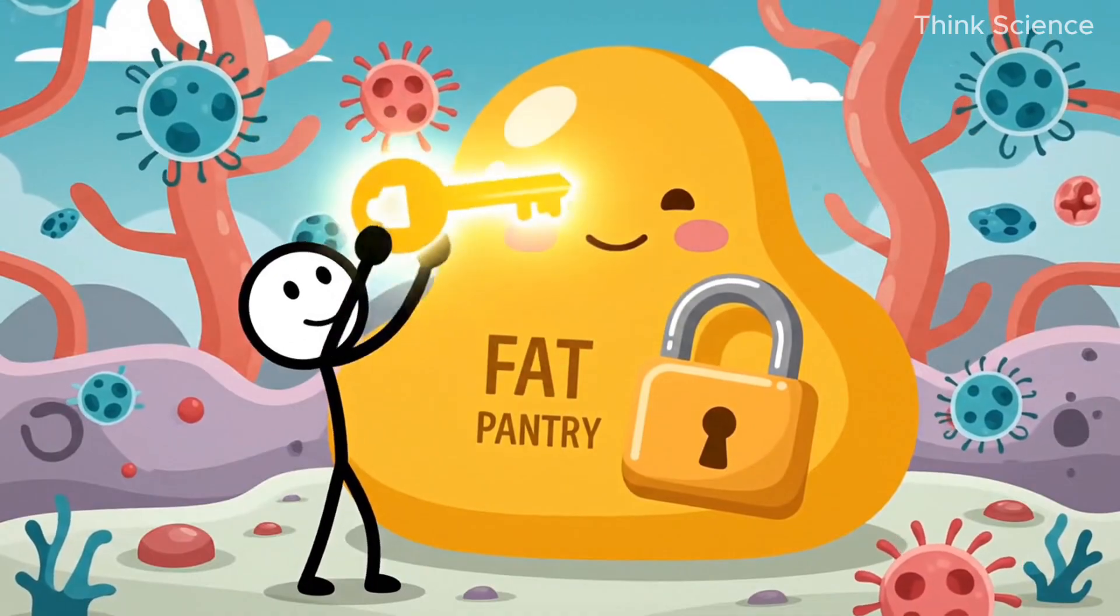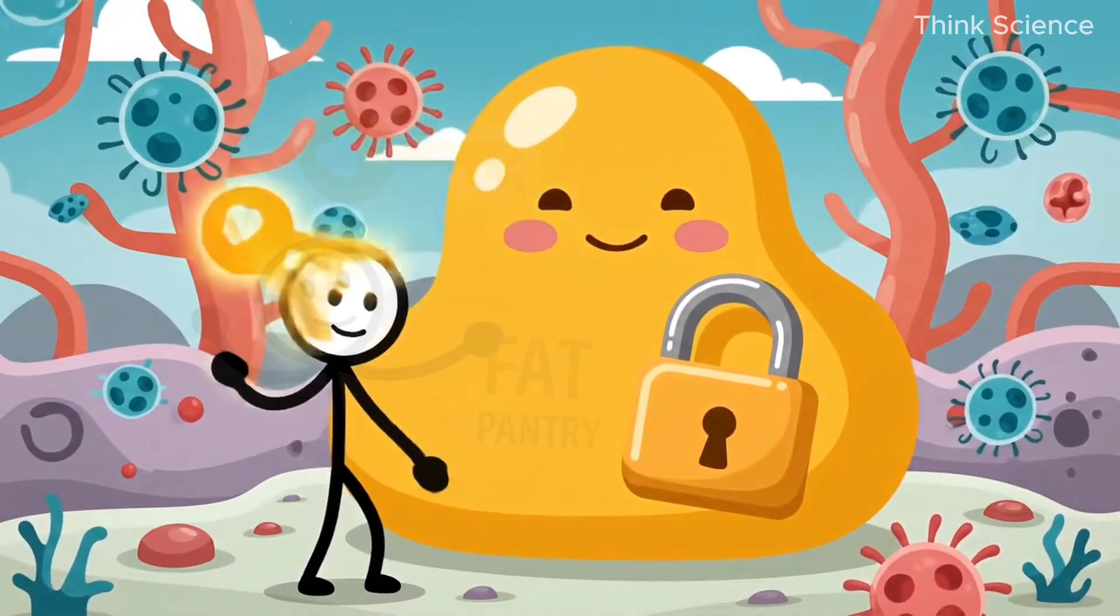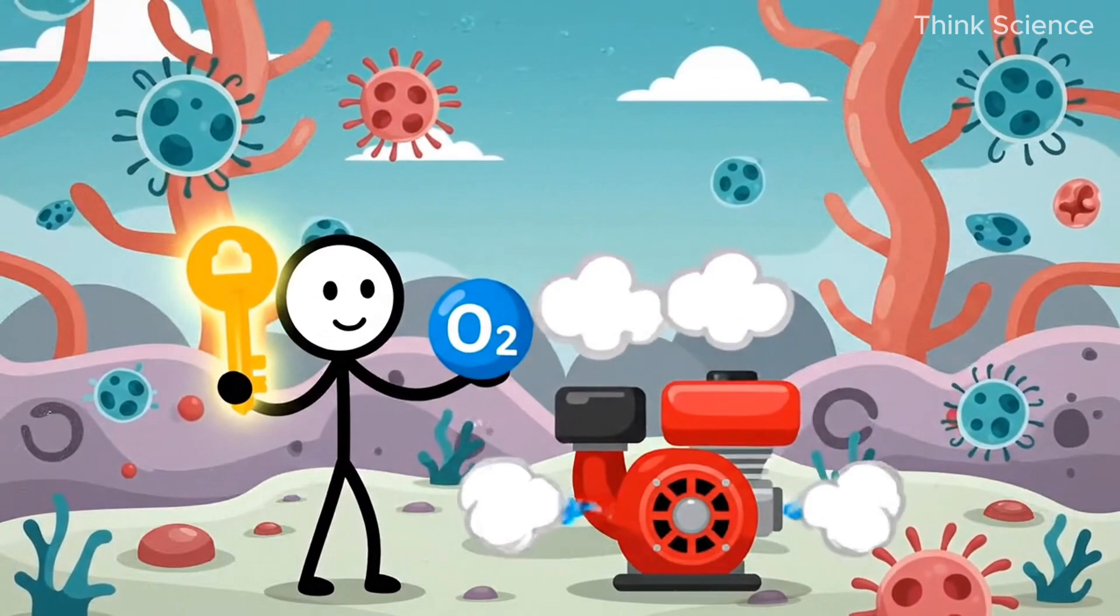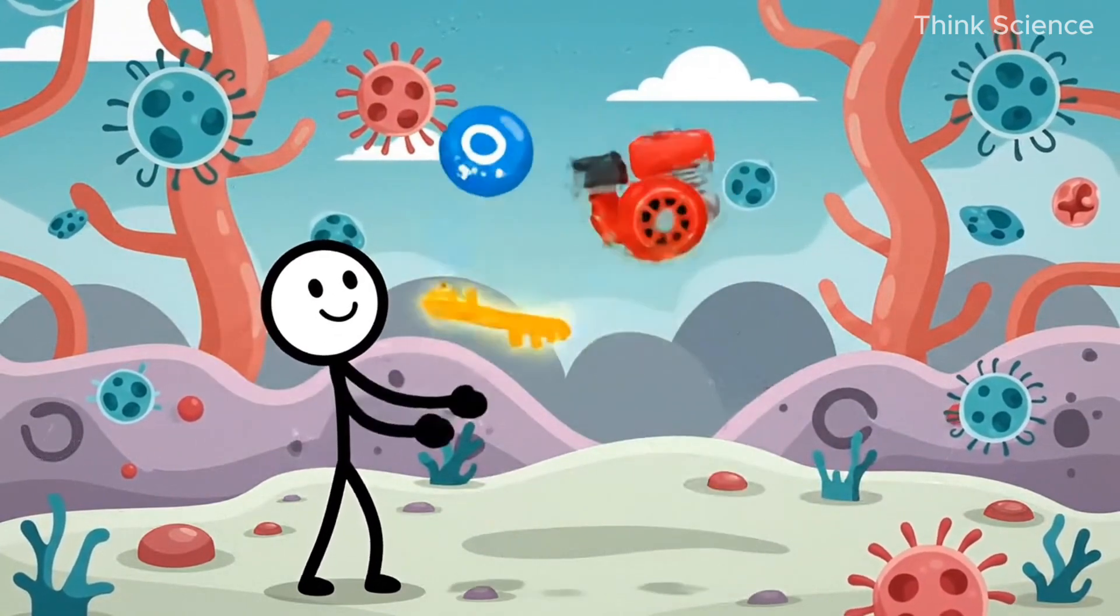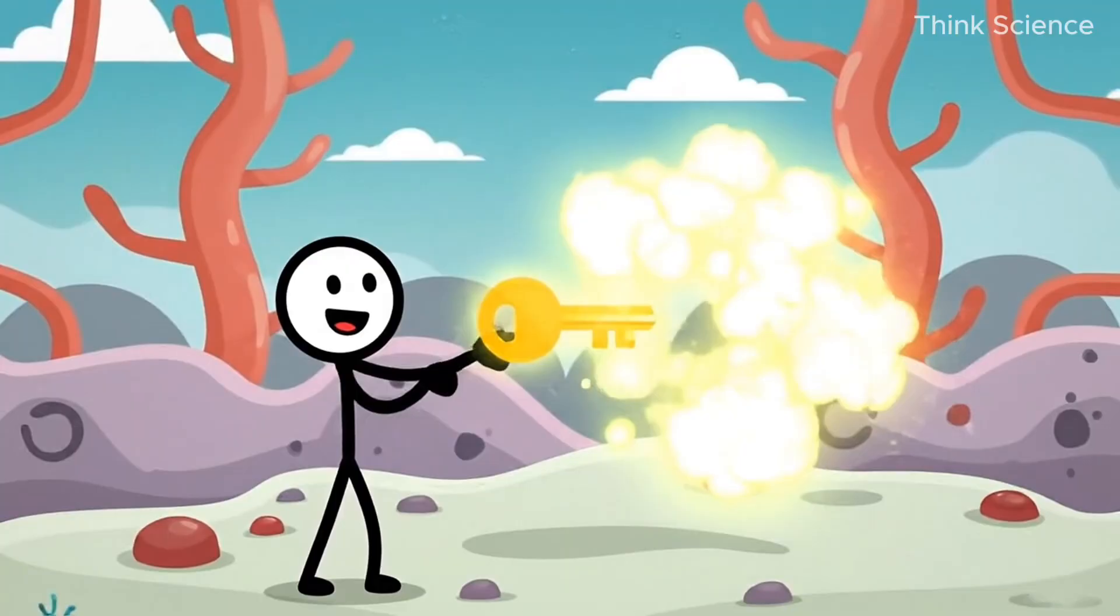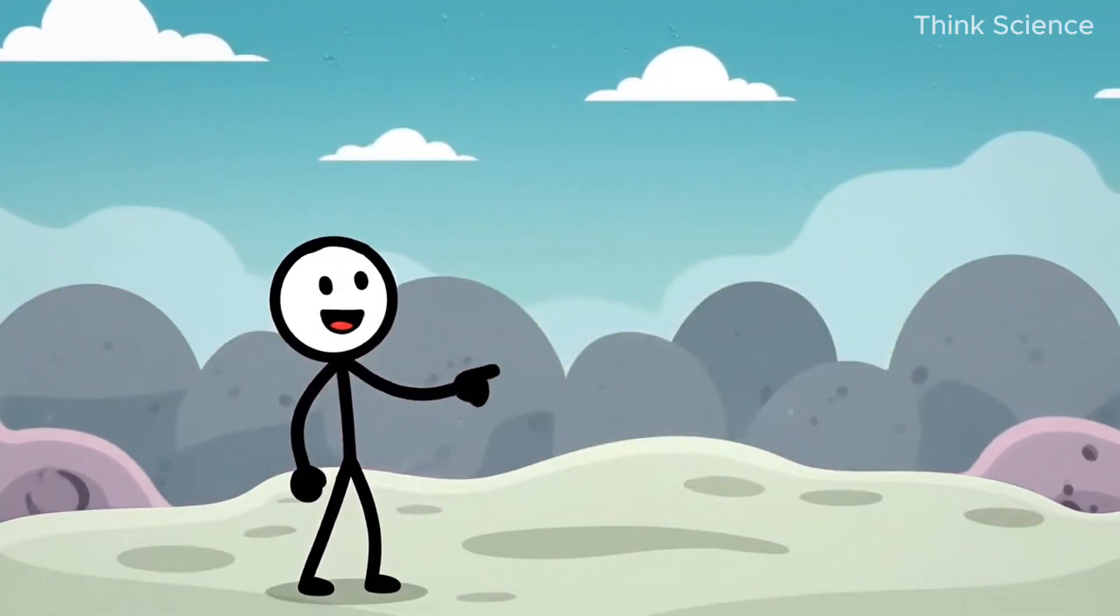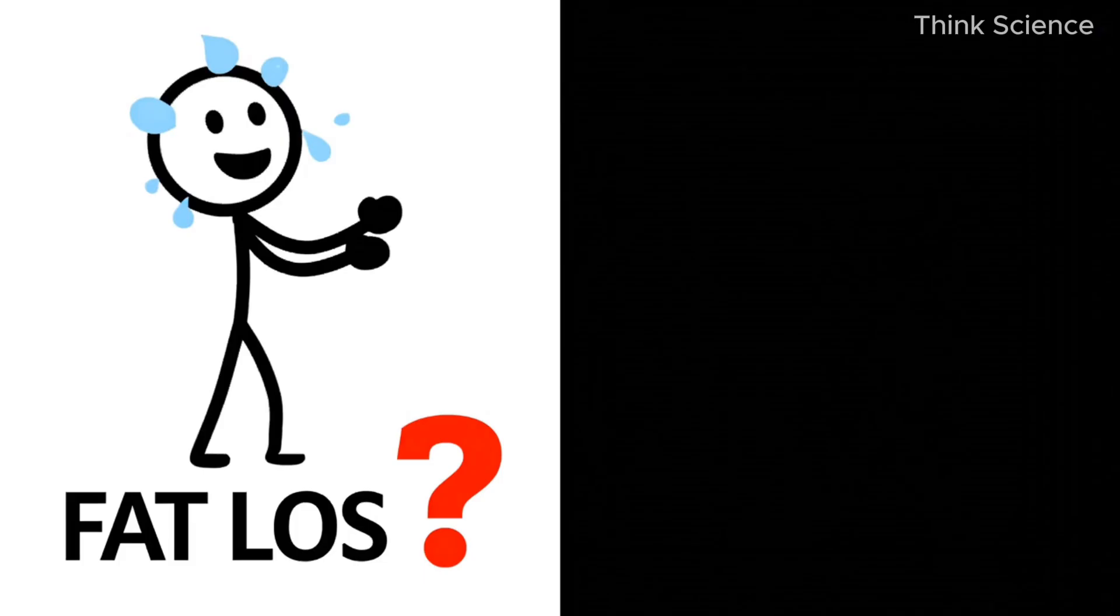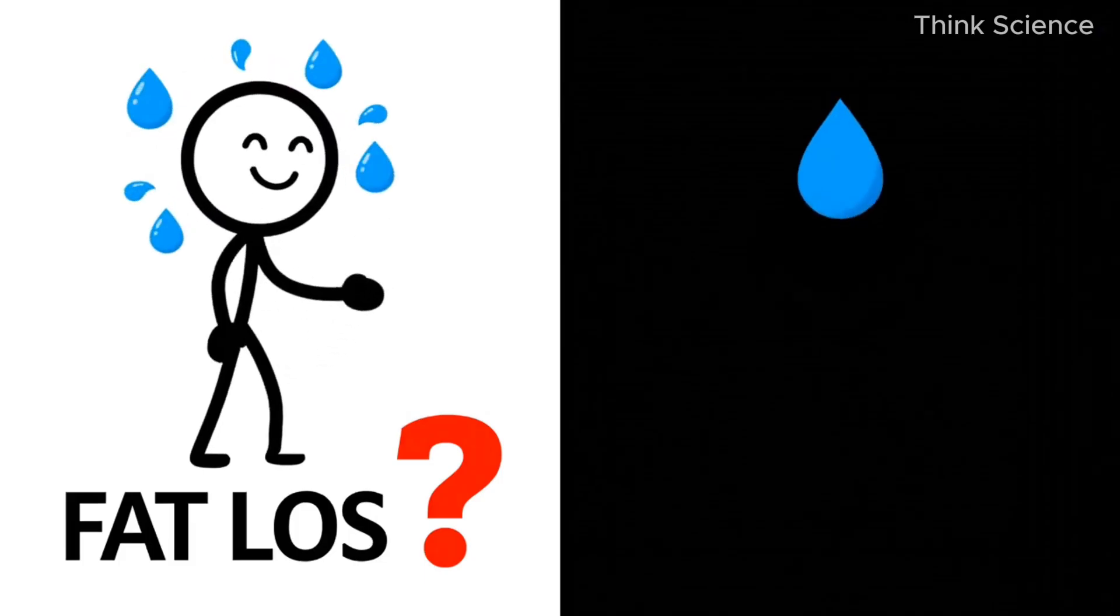A key that signals fat cells to open, oxygen to burn the fat, and an engine that uses the fuel—your muscles and organs. When your body burns fat, it breaks down and leaves as carbon dioxide and water. You literally breathe fat out. And this matters more than you think, which I'll show you soon.